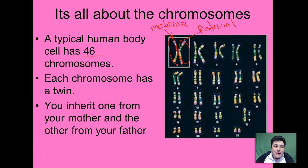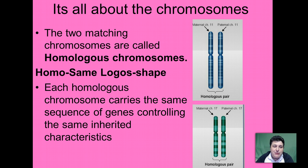If we zoom in at these twin chromosomes — one from our mom and one from our dad — what we're looking at is a homologous pair. Homo is a prefix which means the same, and logos means shape. So each chromosome in a homologous pair looks very much the same. They're going to be the same size and they're going to be carrying the same traits, the same genes that control the inherited characteristics.